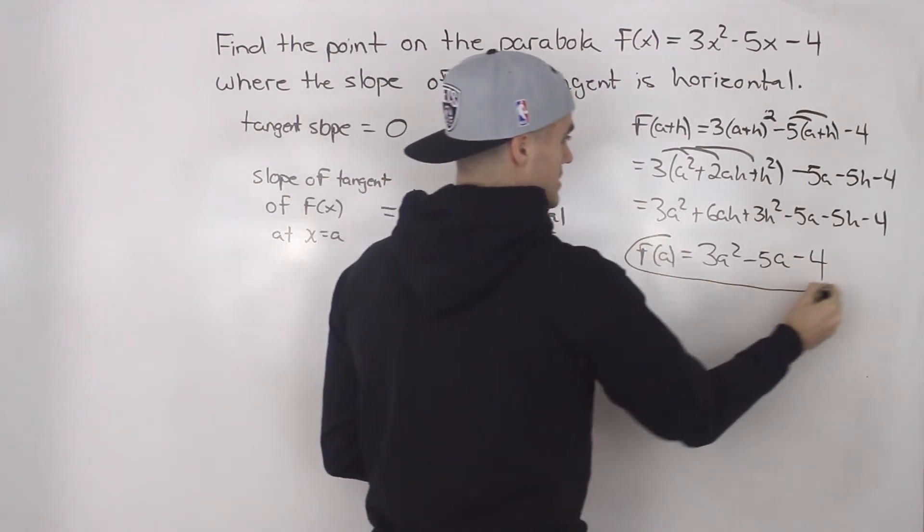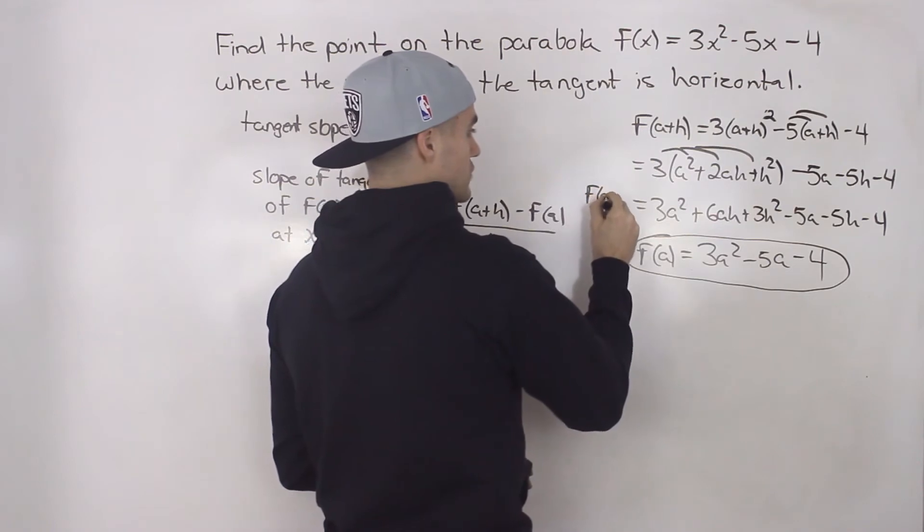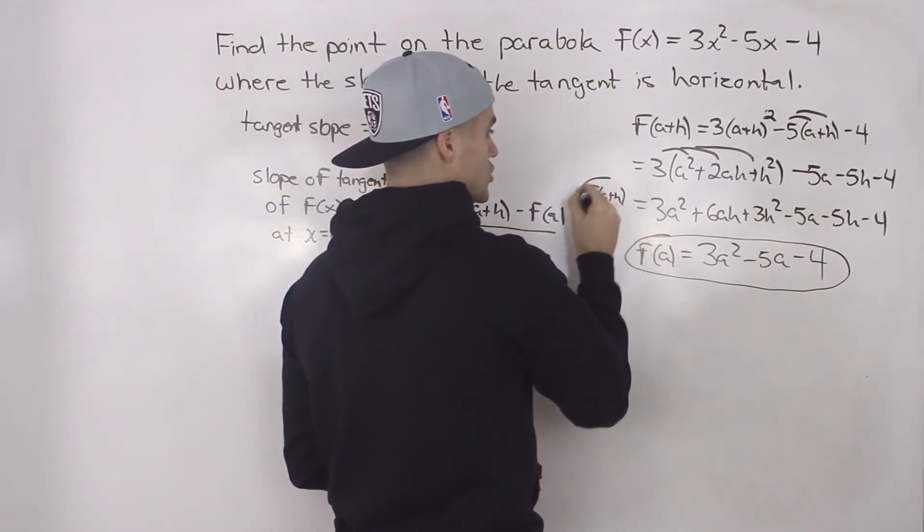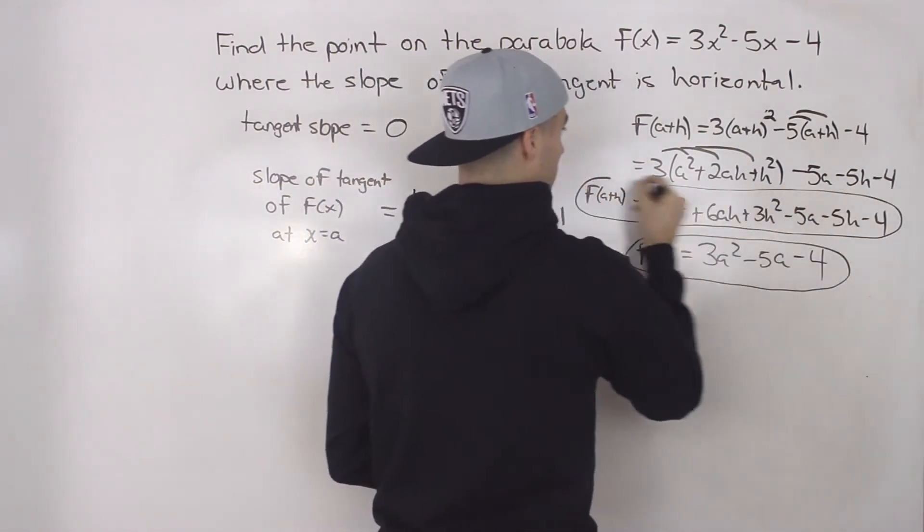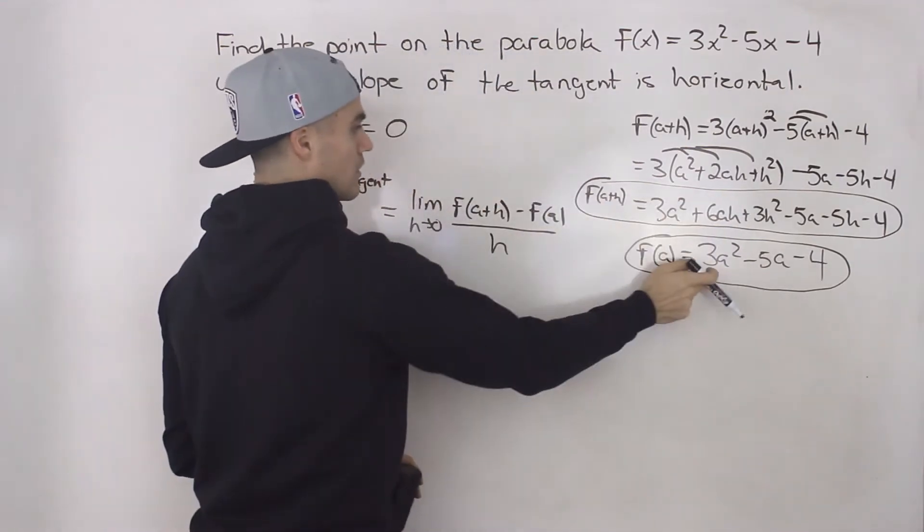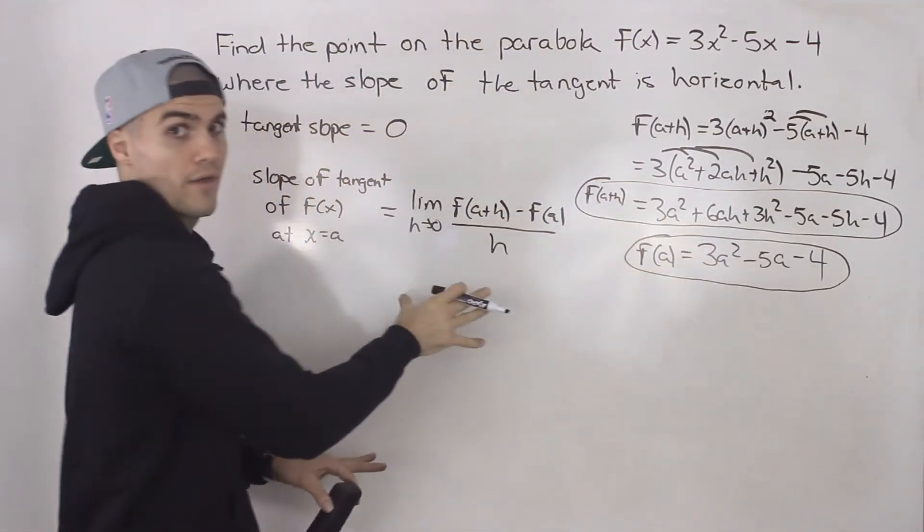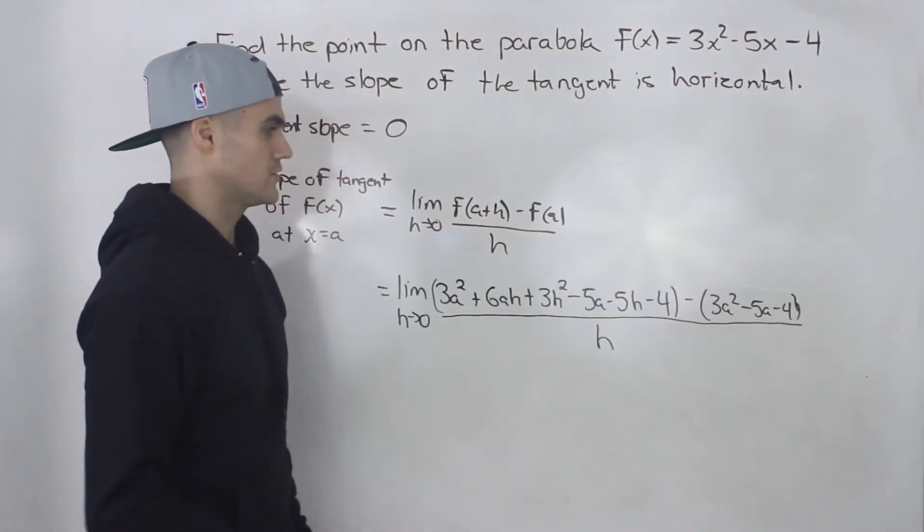So this is the expression for f(a), and then this is the expression for f(a + h). So we're going to plug this in here, and then this in here into that difference quotient. So when you do that,